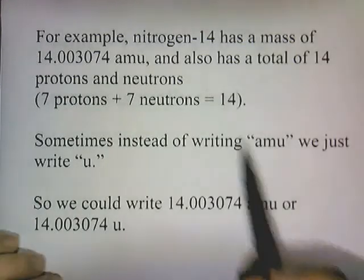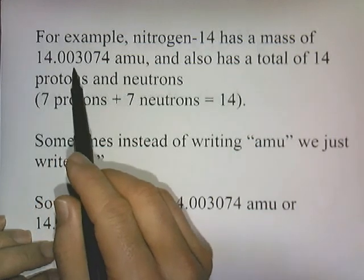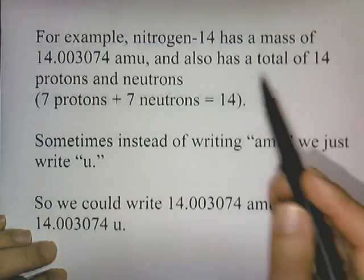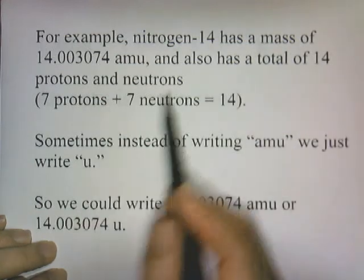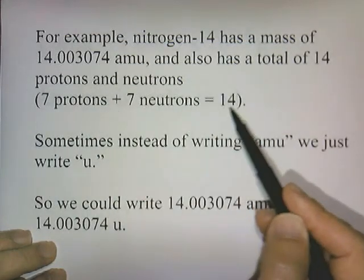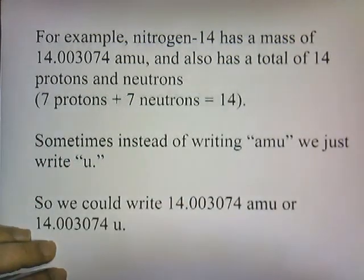Here's another example. Nitrogen-14 has a mass of 14.003074 atomic mass units. Guess what, it has a total of 14 protons and neutrons. So nitrogen-14 has seven protons and seven neutrons, which equals 14, which is pretty close to what we have here for the atomic mass units.